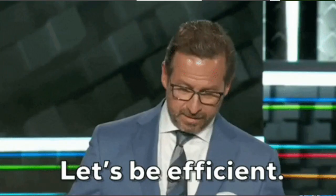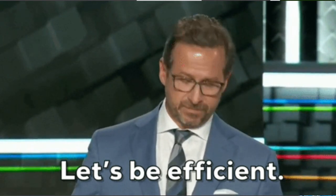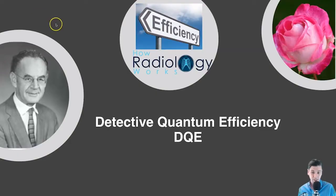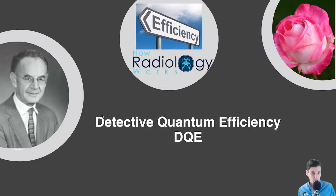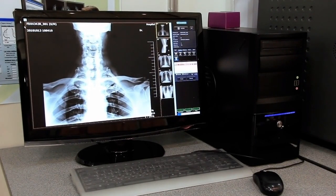Detective quantum efficiency is a method to assess how efficient a system is at converting x-rays into the actual image signal itself. Albert Rose proposed the first demonstration of the relationship between contrast, the size of the object, and how easy those things are to perceive in a medical image. He also proposed the concept of detective quantum efficiency, a method to study the efficiency of the system for converting x-rays into our medical image.